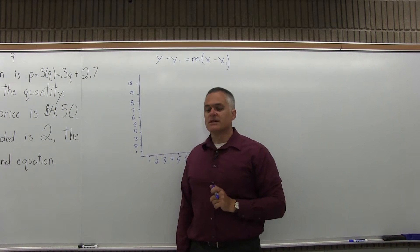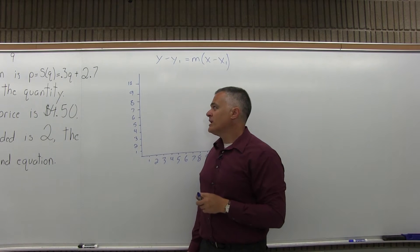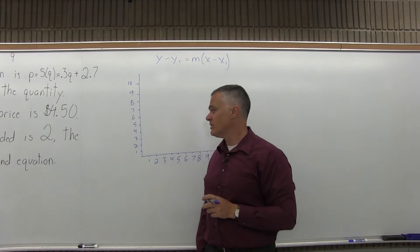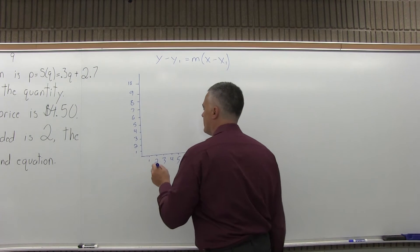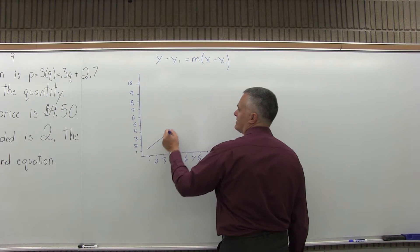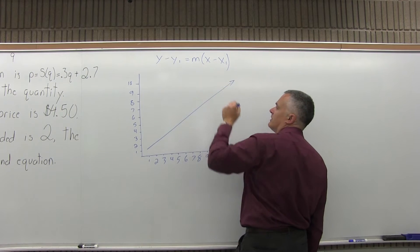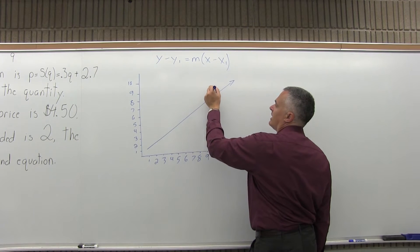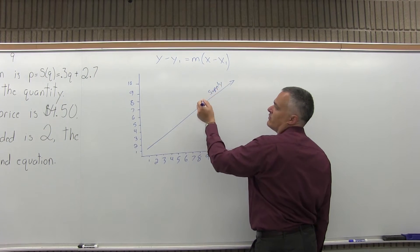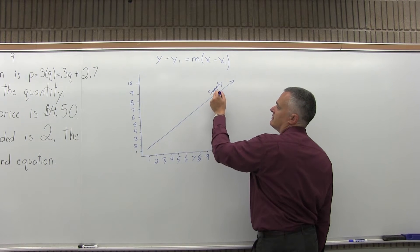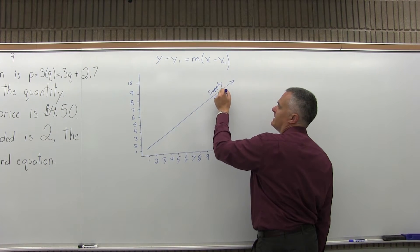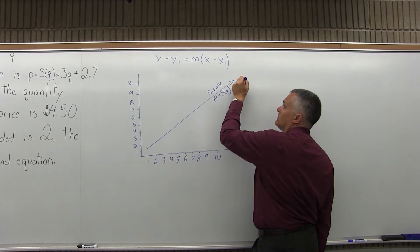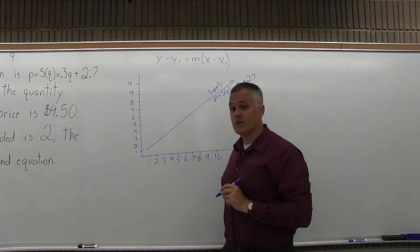The question tells us that the supply equation is P equals S(Q) equals 0.3Q plus 2.7. That supply equation is a line that's going to go up as you go from left to right. We can label that supply.